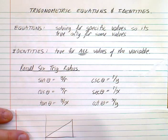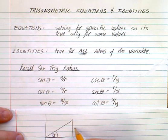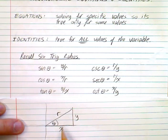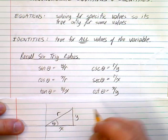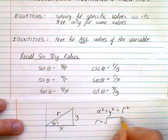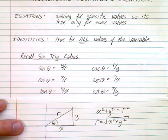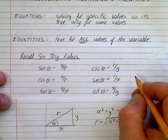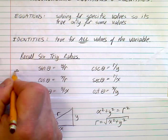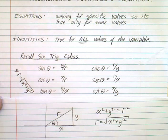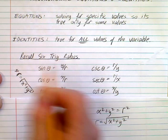If I have a triangle on an xy-axis, where this is your theta, we've called that y, that x, and that r. So sine theta is y over r, cosine theta is x over r — that's how we get all the trig ratios. We also have the Pythagorean relationship: x squared plus y squared equals r squared. So r equals the square root of x squared plus y squared. This will come up again when we try to prove some of these identities.